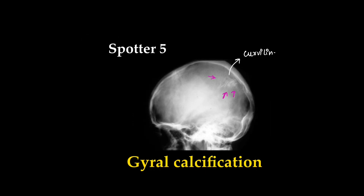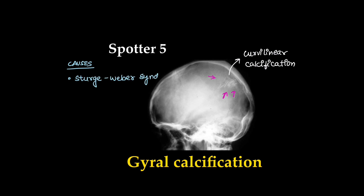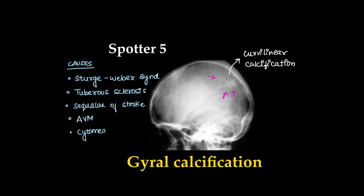Here we can see a curvilinear calcification. This is gyral calcification or gyriform calcification. Multiple causes include Sturge-Weber syndrome, tuberous sclerosis, sequelae to ischemic stroke, arteriovenous malformation, and infections like cytomegalovirus and toxoplasmosis.